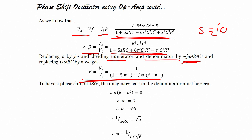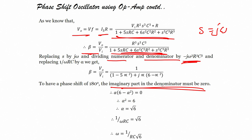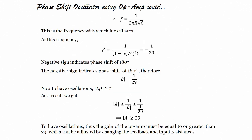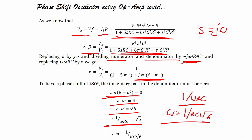To have a phase shift of 180 degrees, the imaginary part of the denominator must be zero. The imaginary part of the equation gives: α·(6 − α²) = 0, so α² = 6, meaning α = √6. Since α = 1/(ωRC), we get ω = 1/(RC√6), and therefore the oscillation frequency is f = 1/(2π·RC·√6).